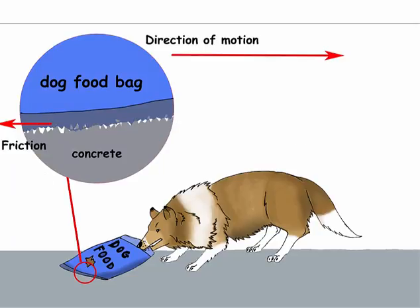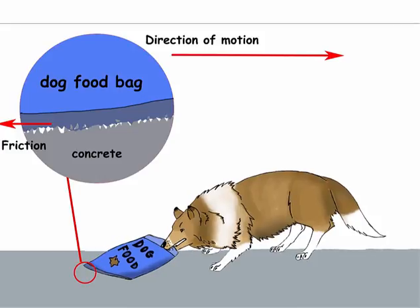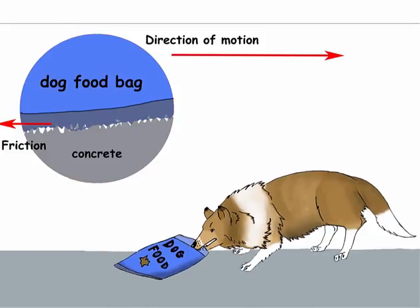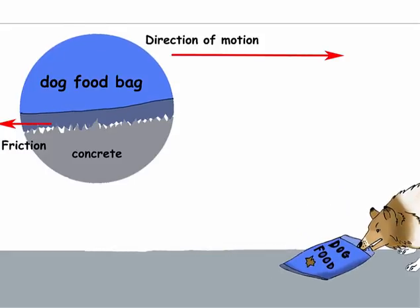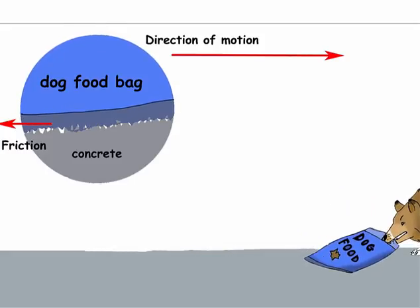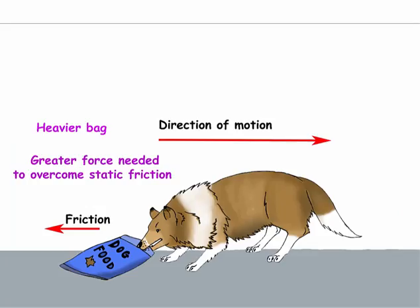Friction happens because of microscopic roughness between the two surfaces. For the bag to move, it must skip along the surface and break off the peaks as seen in this close-up. Friction is actually due to adhesive forces between the molecules making up the two objects. Once the peaks are broken up, less force is needed to keep the object in motion, which is less than the initial force needed to move the object.